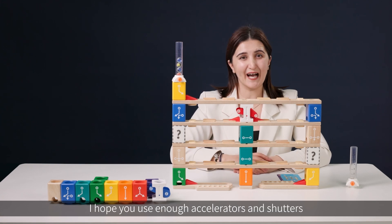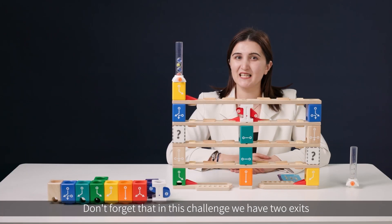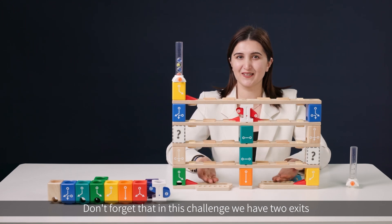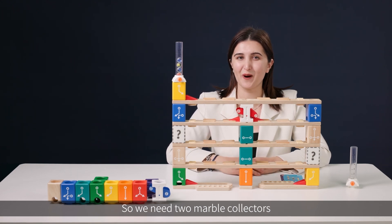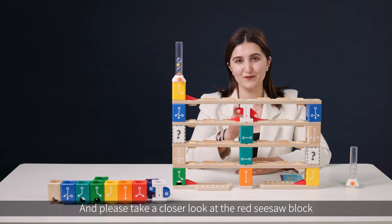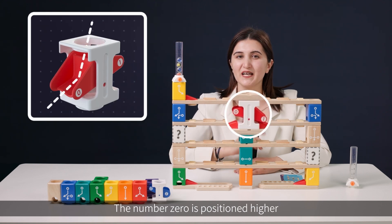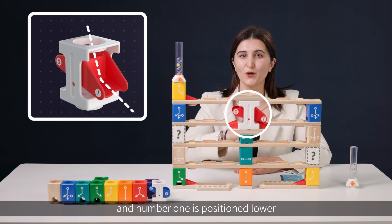Here is our build. I hope you used enough accelerators and shutters. Don't forget that in this challenge we have two exits, so we need two marble collectors. And please take a closer look at the red seesaw block. The number zero is positioned higher and number one is positioned lower.